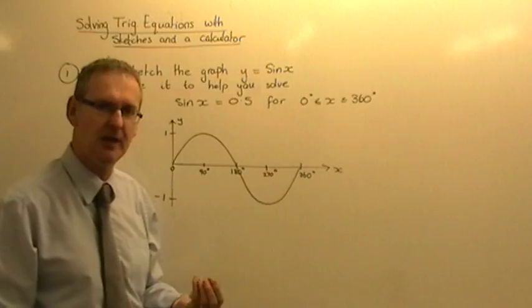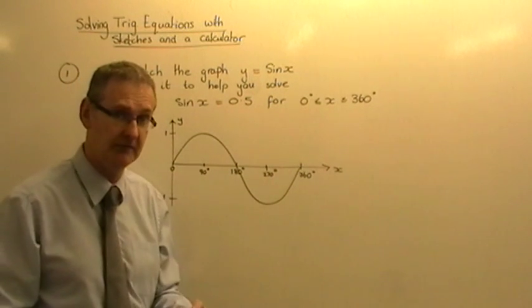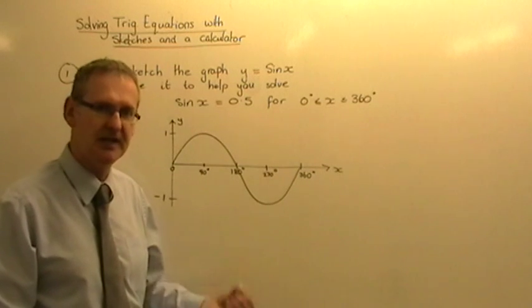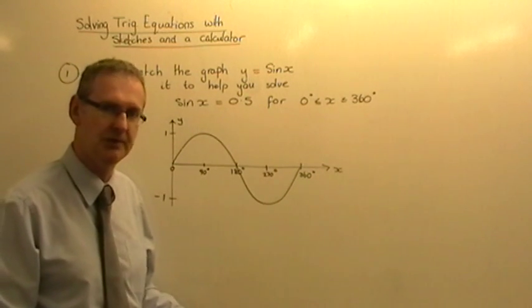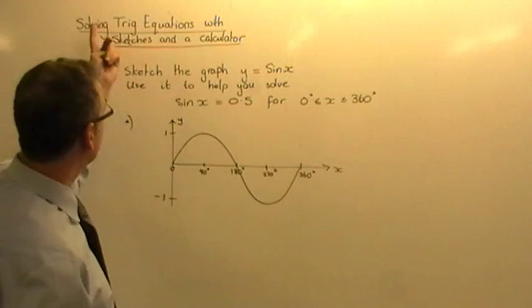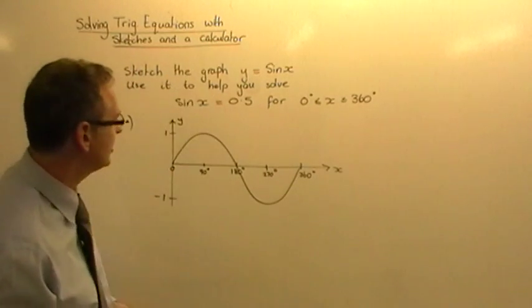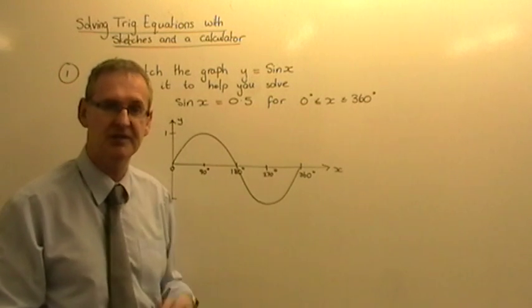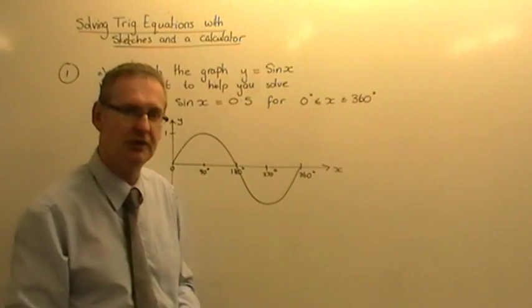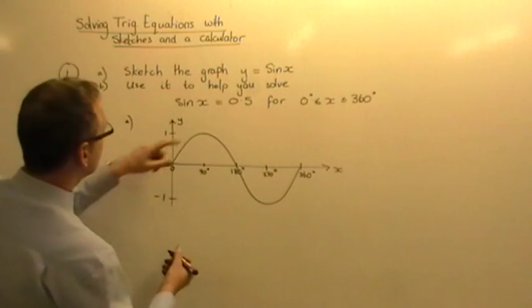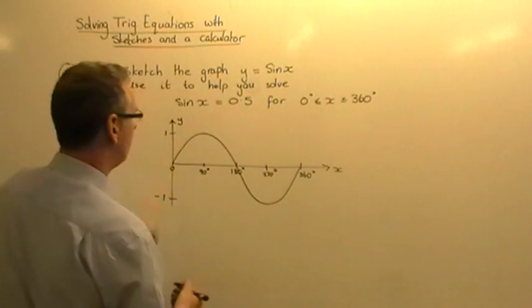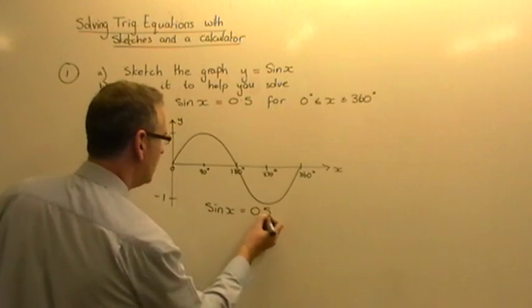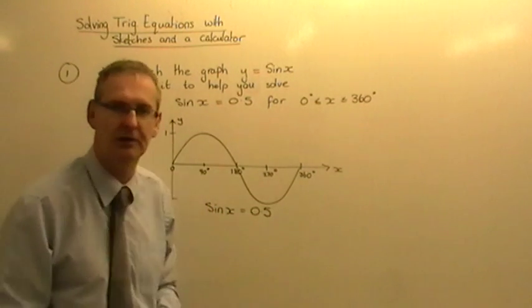Now, part B is going to ask you to use that sketch. Notice it's not an accurate picture. Use that sketch to help you get the answer to what we call a trig equation. What you're going to do is use your sketch in combination with a calculator to get your answers. Let me show you what I mean. What we're going to do is solve sine x equals 0.5. So if I write this down, sine of x equals 0.5, here is the equation I'm going to solve.